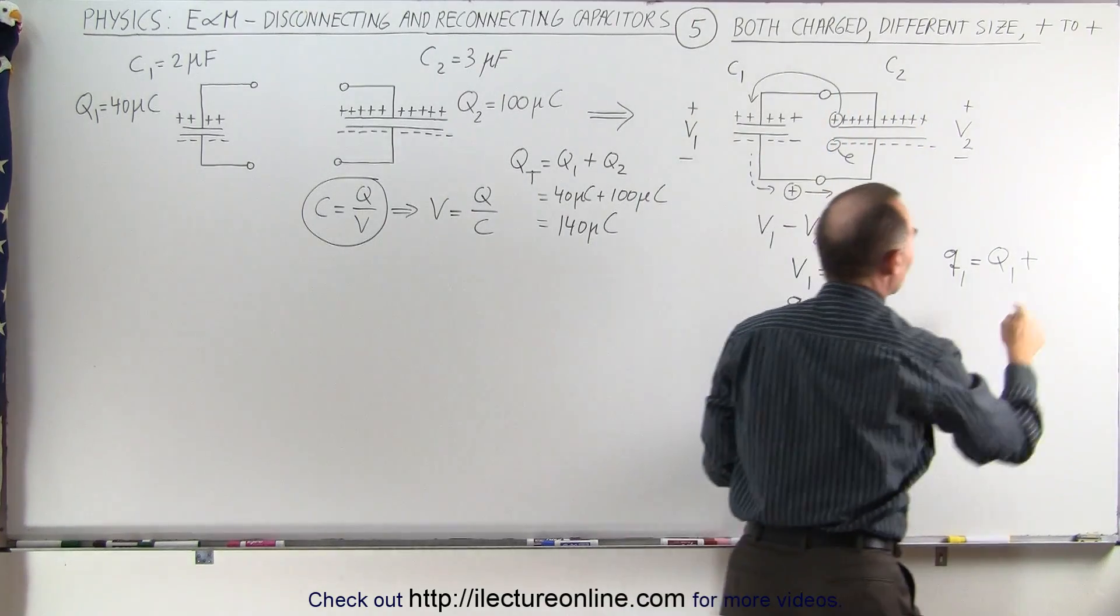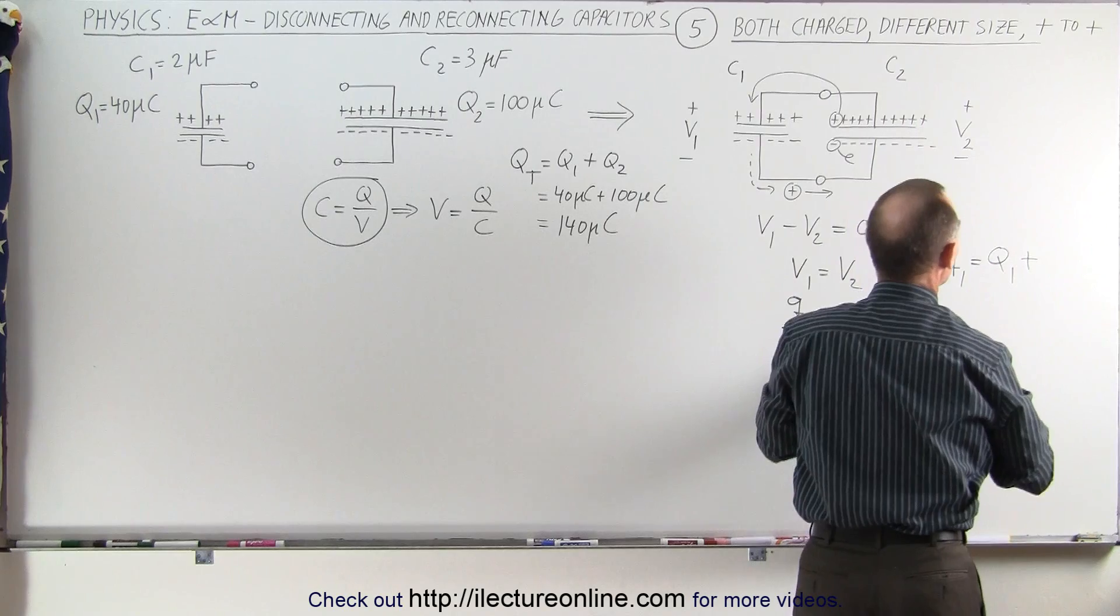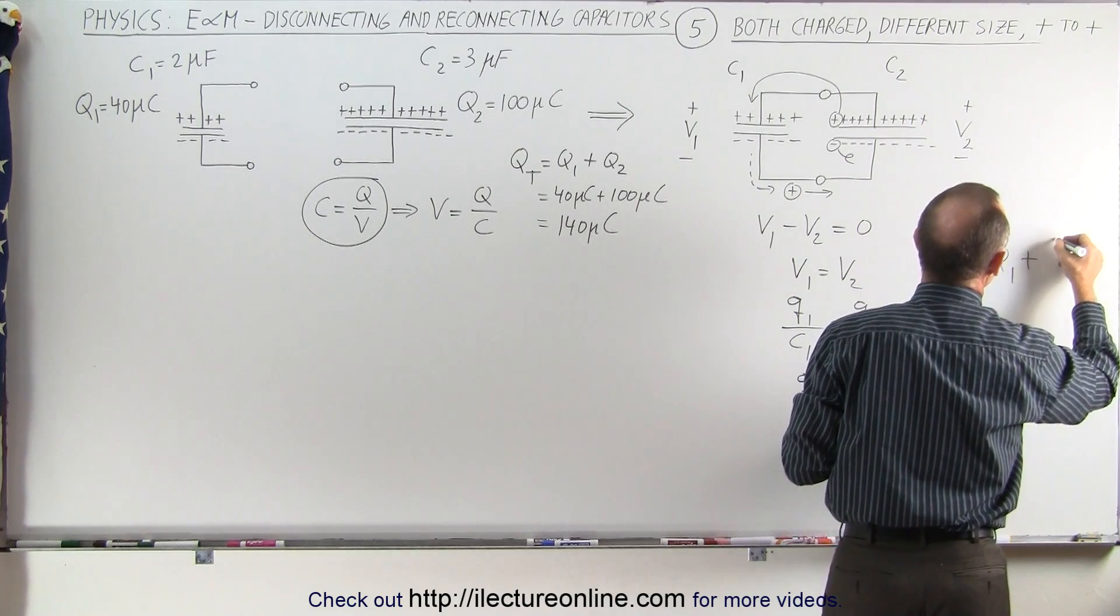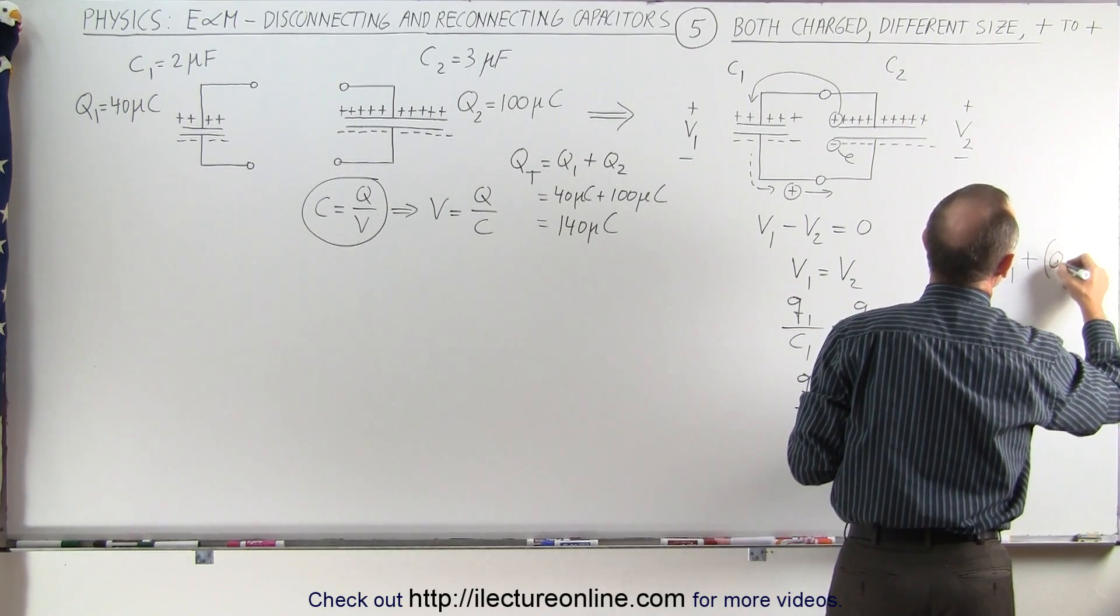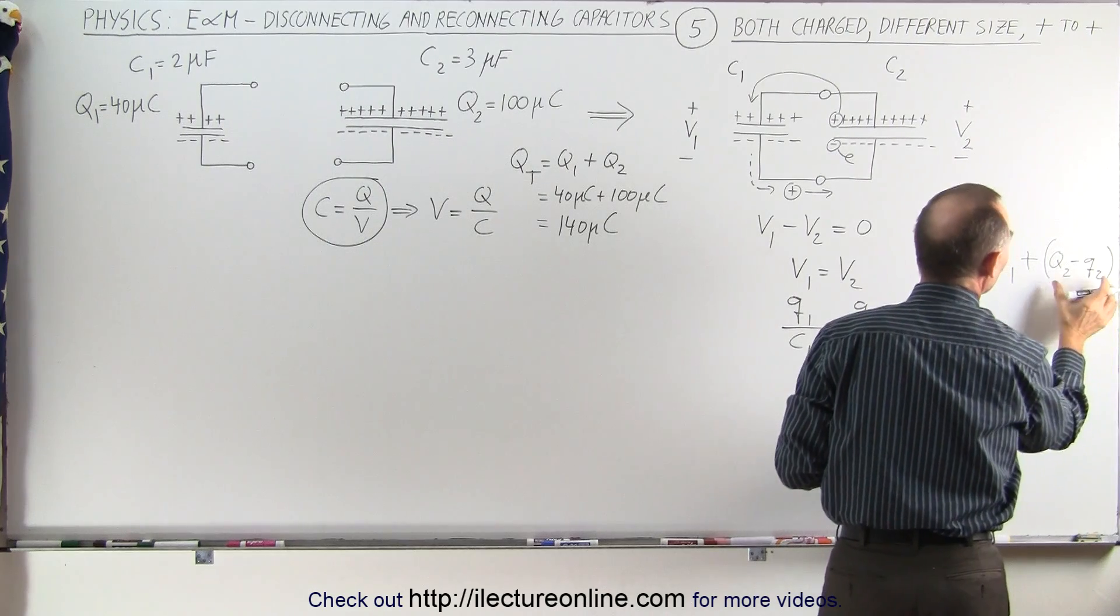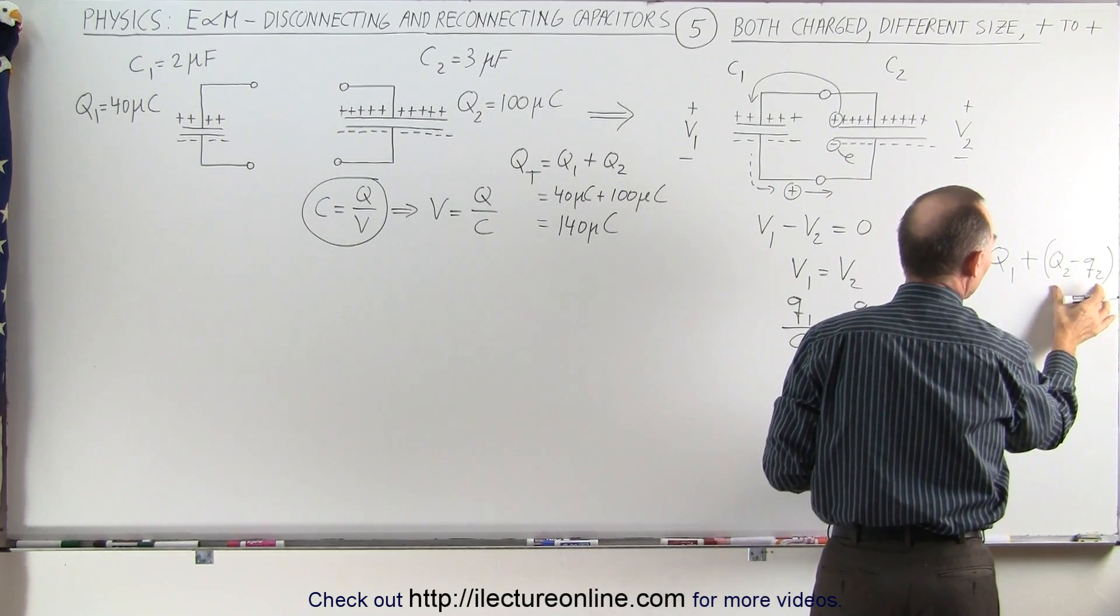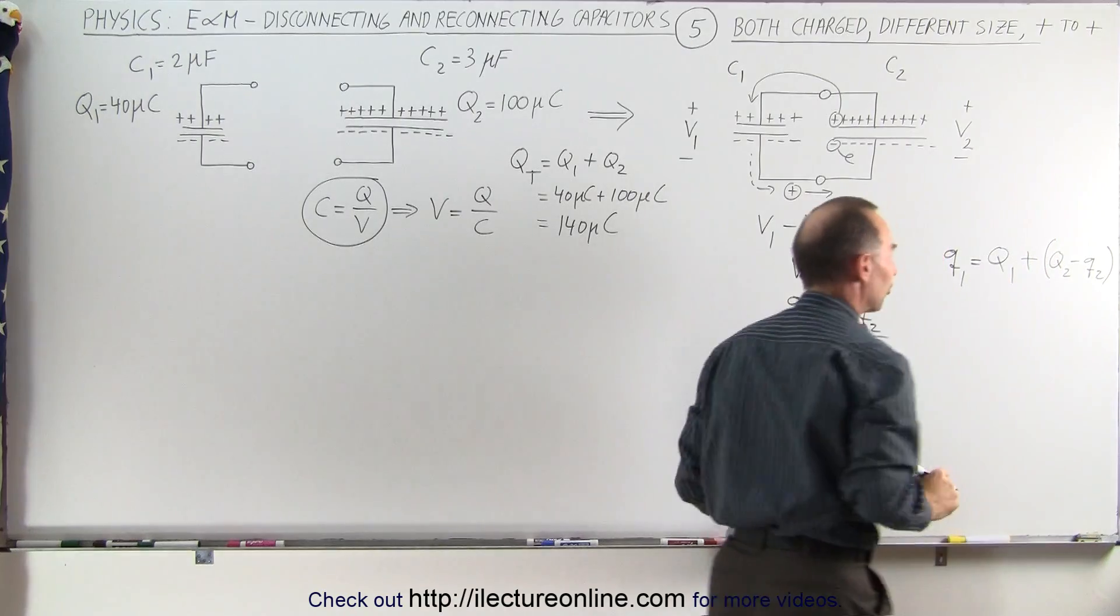That difference is going to move over here. So that's going to be the additional charge on C1. So we can say that's plus Q2 minus little q2. That's how much charge left the second capacitor, which will get added to the first capacitor.